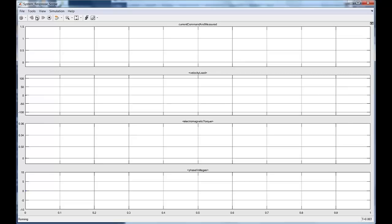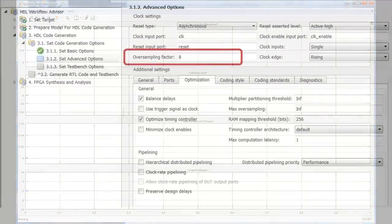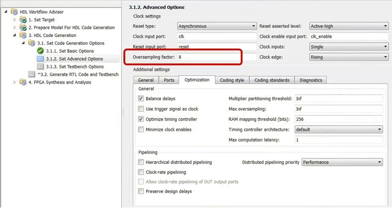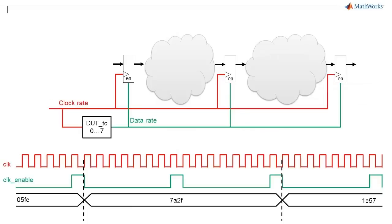But a sample rate this small in Simulink really slows down the simulation. Rather than having to change your sample rate for HDL code generation and back for simulation, you can just specify a global oversampling factor in HDL Coder in the global settings.